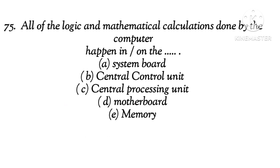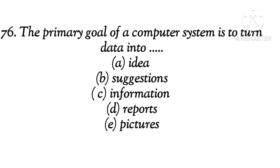Question 25: All of the logic and mathematical calculations done by the computer happen in or on the dash. The right answer is C, central processing unit. Question 26: The primary goal of a computer system is to turn data into dash. The right answer is C, information.